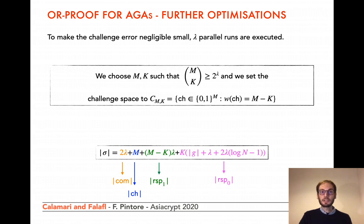A further optimization can be obtained at the expense of slower verification. The optimization uses a primitive to generate a number of pseudorandom strings and later disclose an arbitrary subset of m. This technique can be tuned to obtain different trade-offs and allows reducing the term (m−k)·λ to λ.